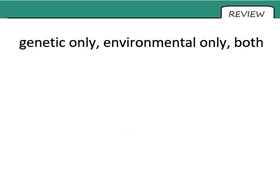If you've reached this point you should have organized those nine types of variation into three groups of three. Let's go through them. Three types caused by genetics only: blood type — your environment has no effect on that at all; your natural eye color; and whether or not you have dimples. All three are decided solely by the DNA you inherit from your parents.